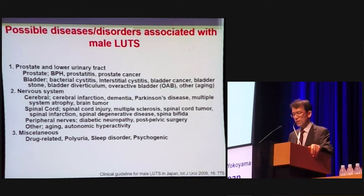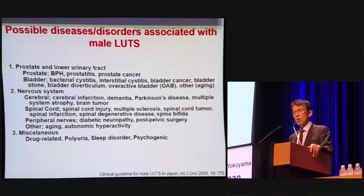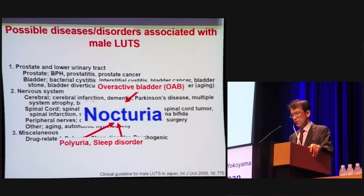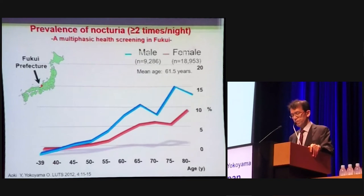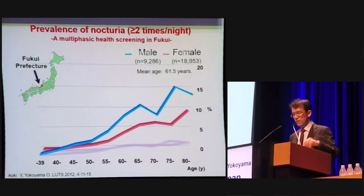In individual LUTS, the most burdensome symptom is nocturia. The possible disorders that induce nocturia include OAB, polyuria, and sleep disturbance. We aimed to evaluate the relationship between lifestyle-related disease and nocturia in Japan.